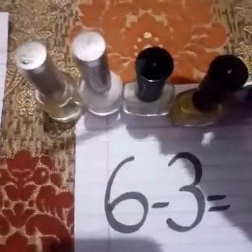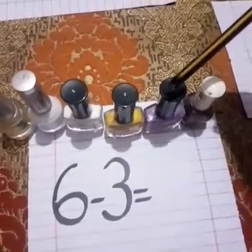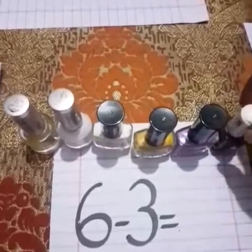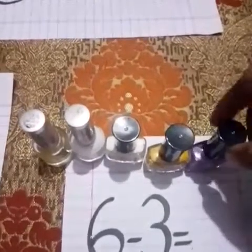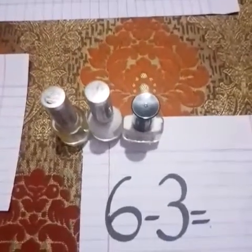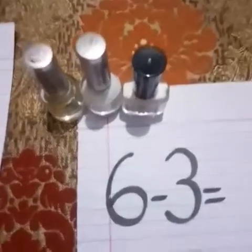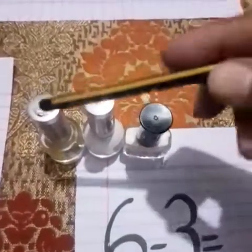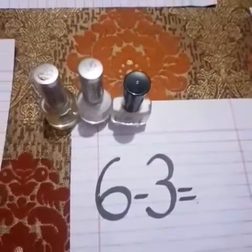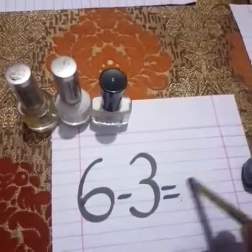Count with me. 1, 2, 3, 4, 5, 6. So we have to give these 3 nail paints to Aisha. How many paints are there? There are 1, 2 and 3 nail paints. We solved the problem. 6 minus 3 equals 3.